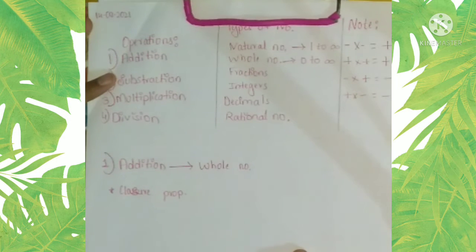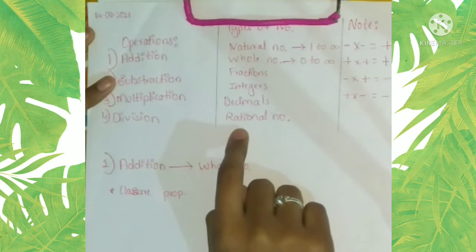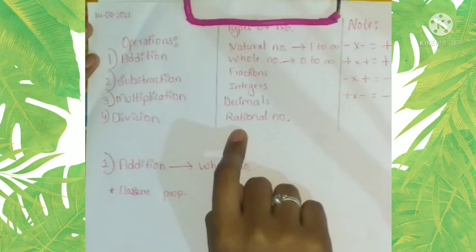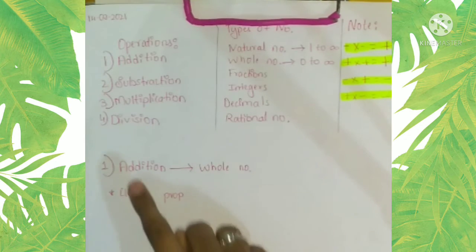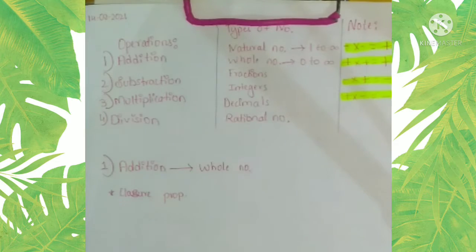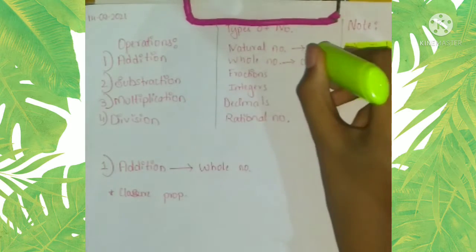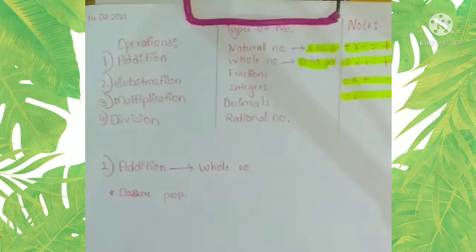In our previous video of mathematics I discussed about the operations, the types of numbers and their examples. In today's video, as you know, we are going to discuss about the properties which I mentioned in my previous video. Let us discuss about the properties of addition. There are some properties in all the operations. We are discussing whole numbers because whole numbers include all the natural numbers and zero.